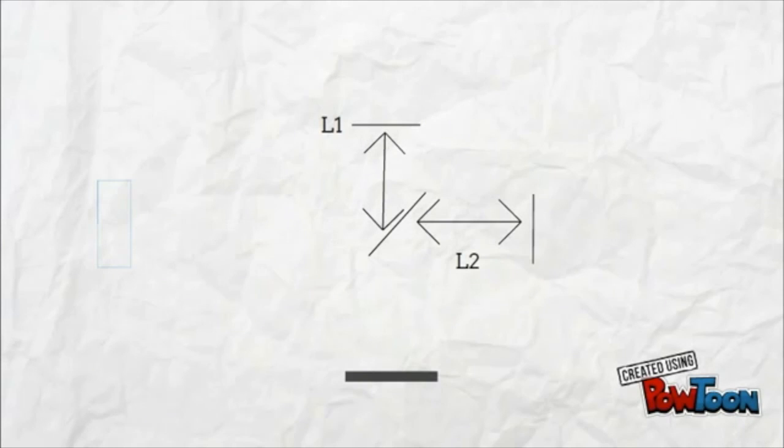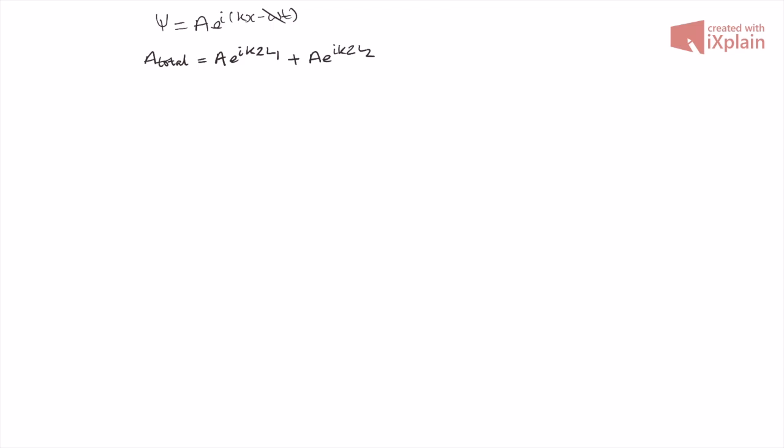In order to measure the intensities of the brightness or darkness of the Michelson interferometer, there are some slightly complicated maths involved. You can model each of the waves in the form of the equation shown, and we'll call the total amplitude at the detector screen A total.